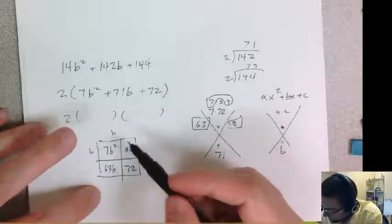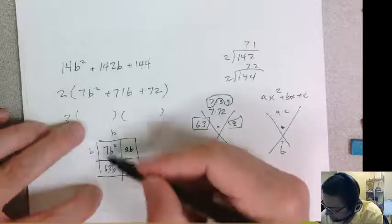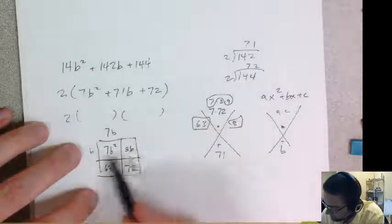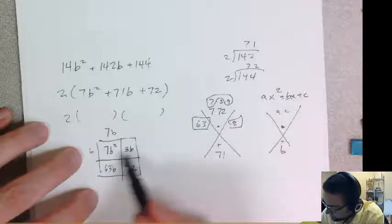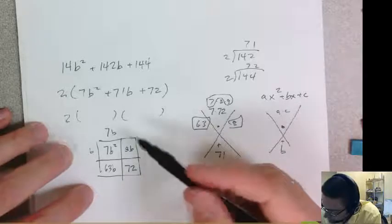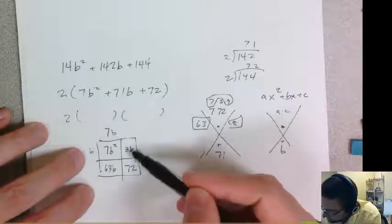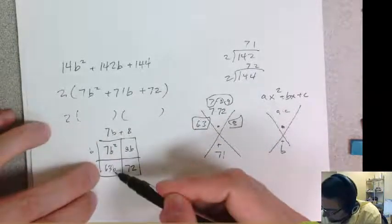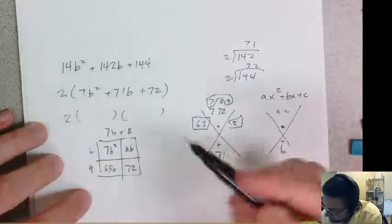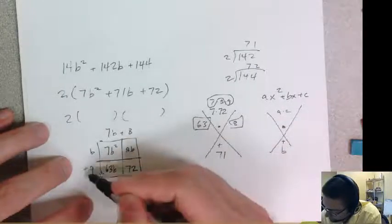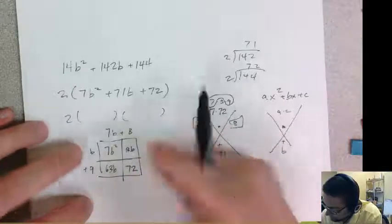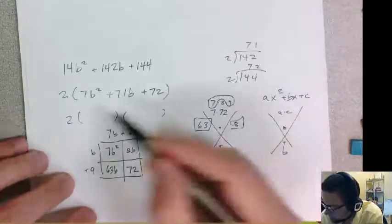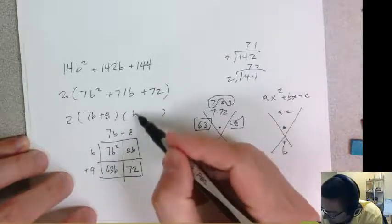So now I could say, what is the greatest common factor here? This is 7 and 63 would be 7, right? 7b. And then what's the greatest common factor this way? It would just, I have no common factor. I could just have the b. So it would be 1b. So b times what gives me 8b. That would be 8, right? And 7b times what gets me 63. That would be 9. So I have b plus 9 and 7b plus 8.